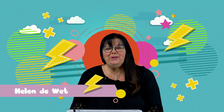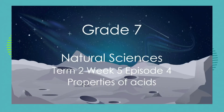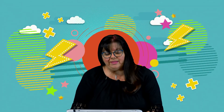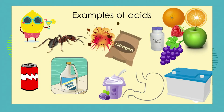Hello grade sevens, Helen here with your latest dose of natural sciences. Today we're going to be focusing on the properties of acids. We've learnt about different examples of acids all around us — in our kitchen, in certain foods, and of course very strong acids found in explosives and to make nitrogen-based fertilizers. We also know that certain acids are present in our own stomach, things we would not really consider.